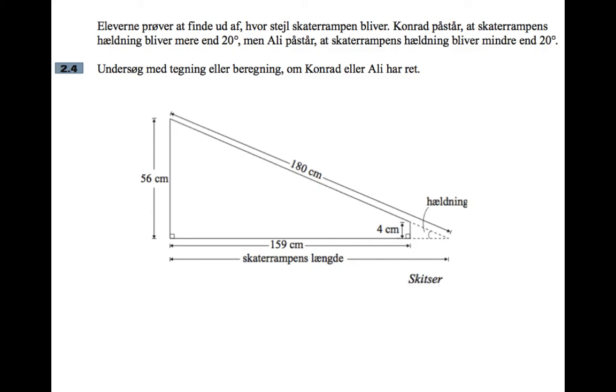Then the pupils are trying to figure out how steep the skater ramp will be. Conrad is claiming that the skater ramp's gradient or steepness will be more than 20 degrees, but Ali is claiming that the skater ramp's gradient will be less than 20 degrees. Investigate with a drawing or a calculation whether Conrad or Ali are right.